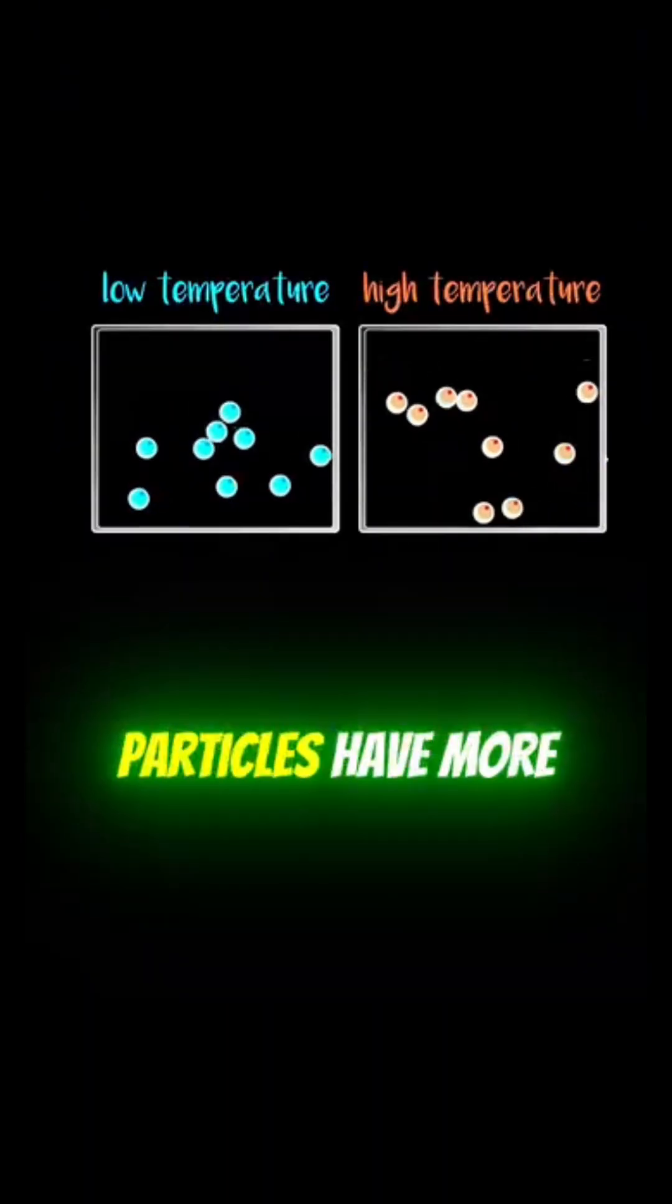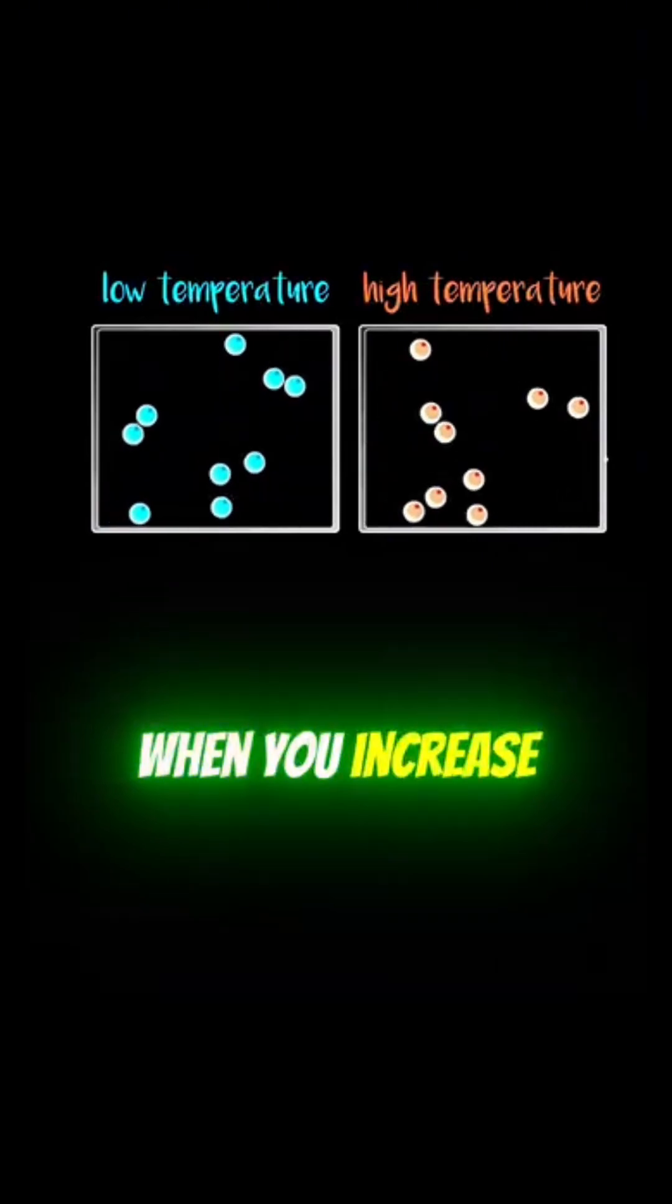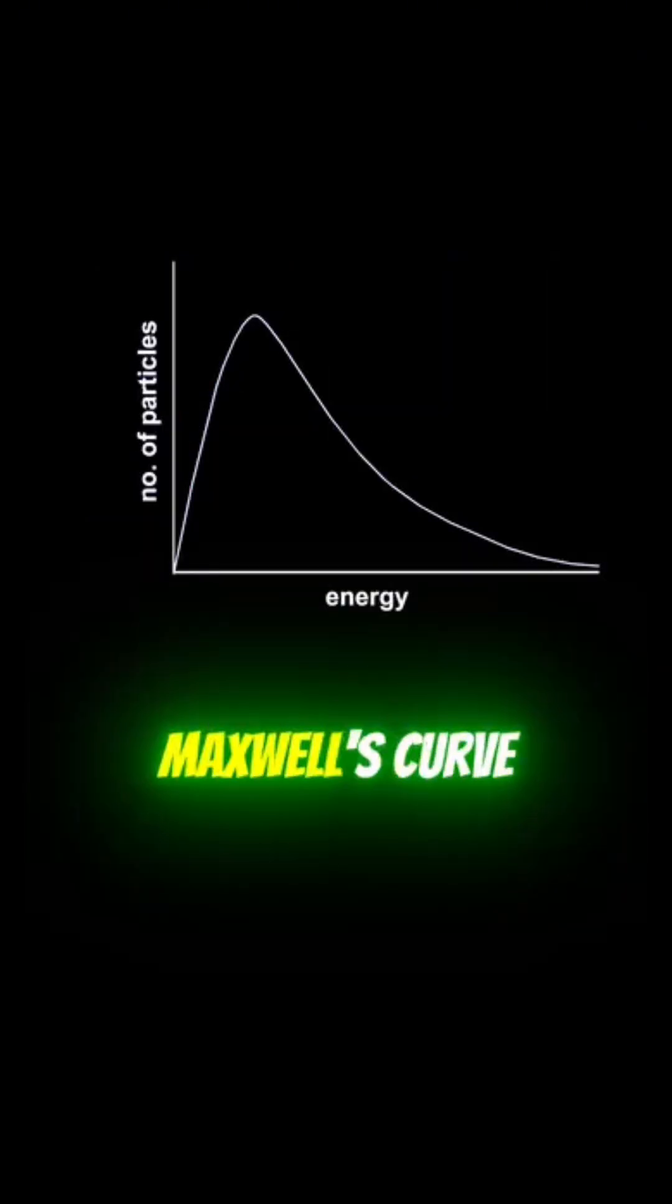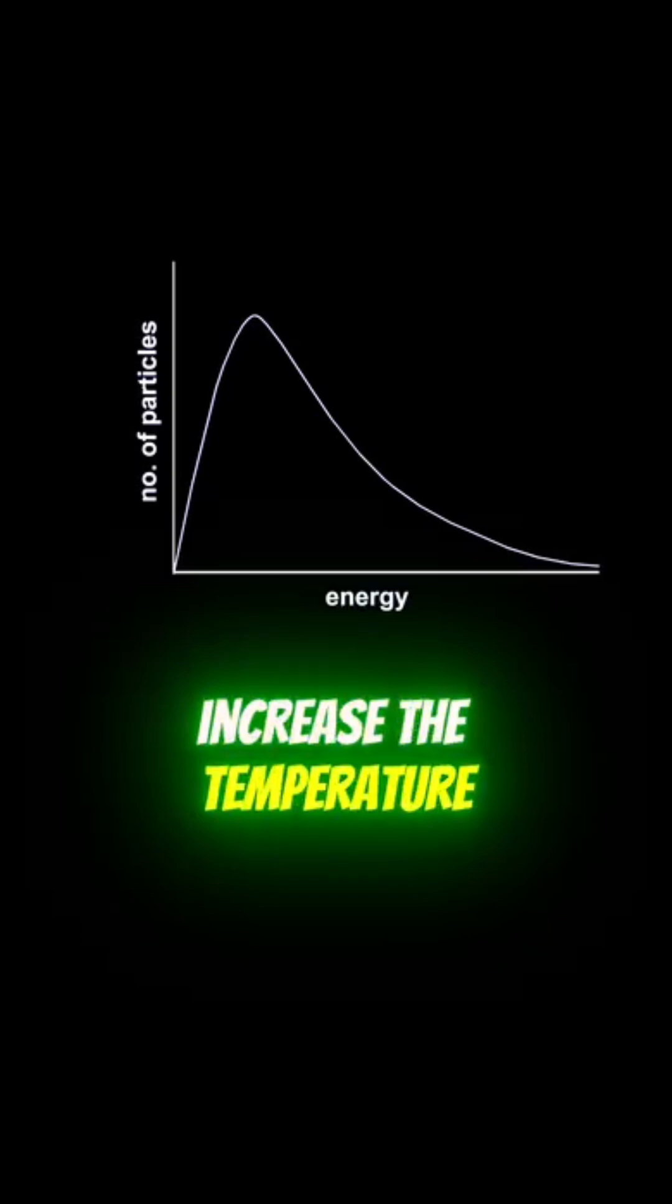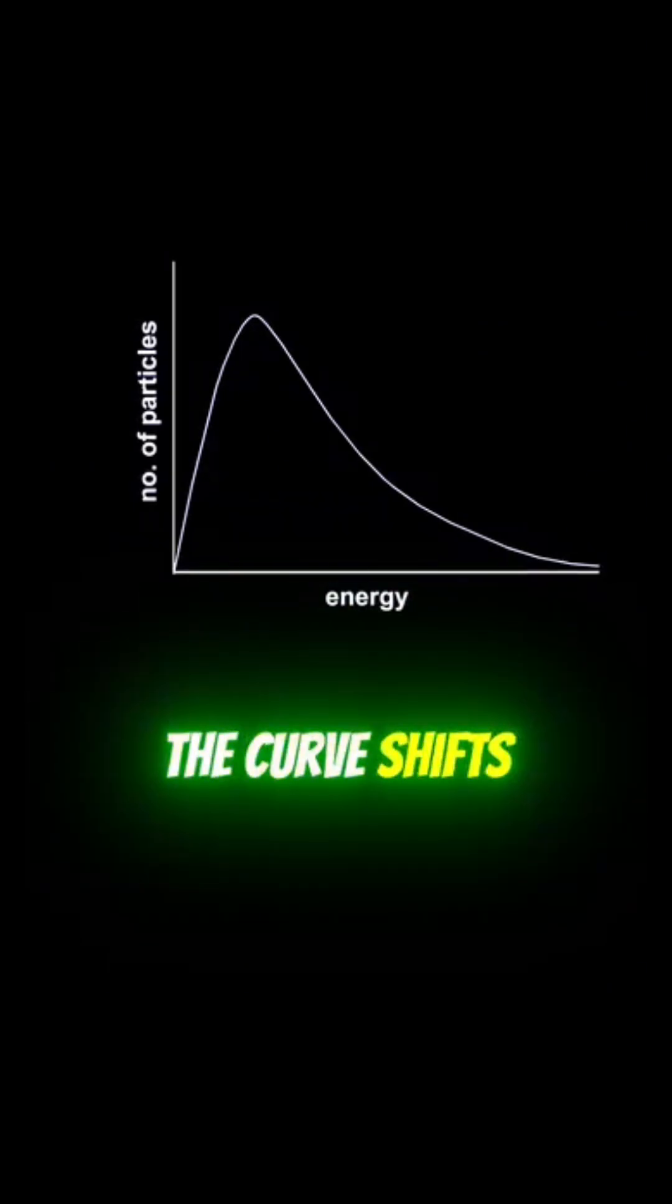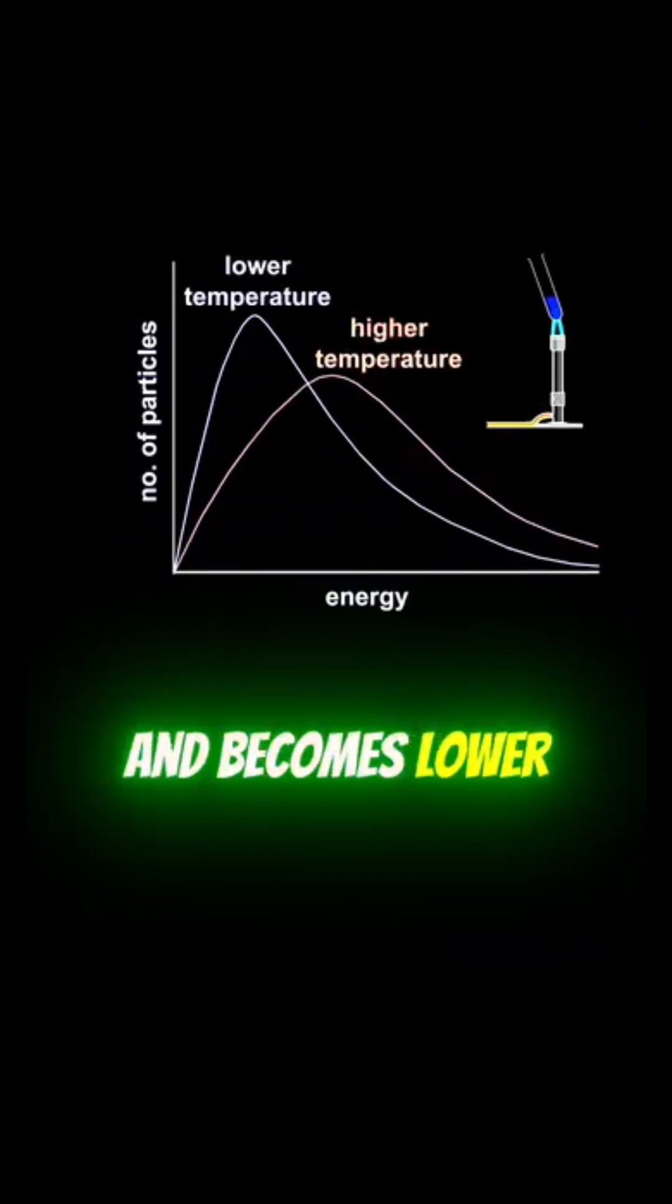As you probably know, particles have more kinetic energy when you increase their temperature. This can be represented by the Maxwell curve because when you increase the temperature, you'll notice that the curve shifts to the right and becomes lower.